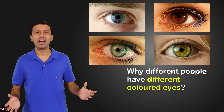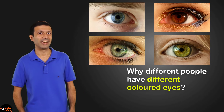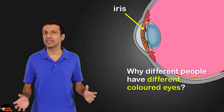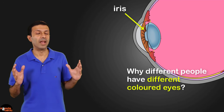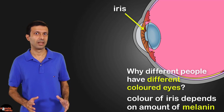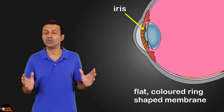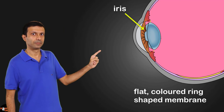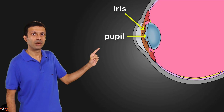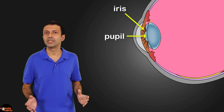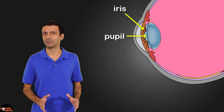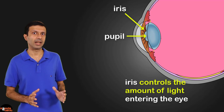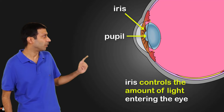Do you know why different people have different colored eyes? It's due to the iris. The color of the iris depends on the amount of melanin present in it. The iris is a flat, colored, ring-shaped membrane located behind the cornea. There's a hole in the center of the iris called the pupil through which light enters the eye.